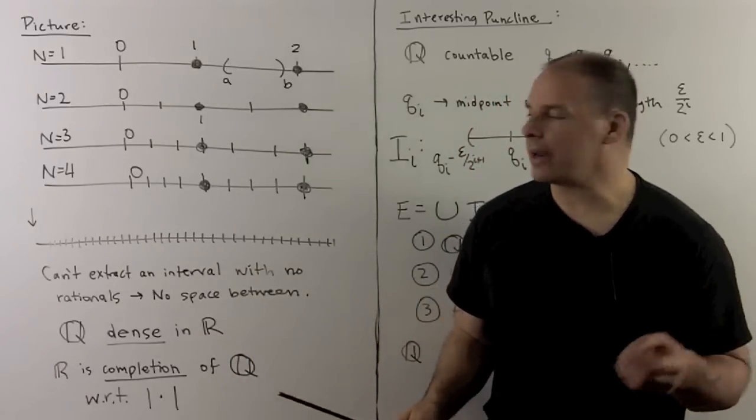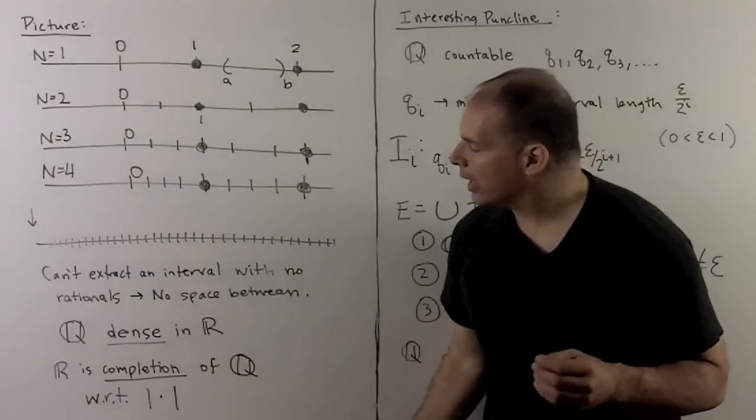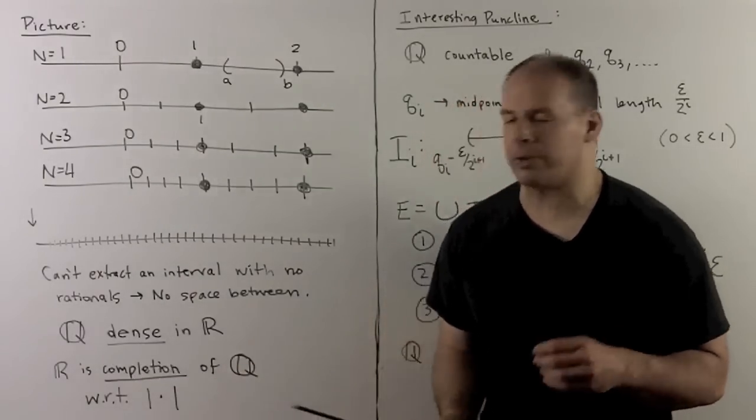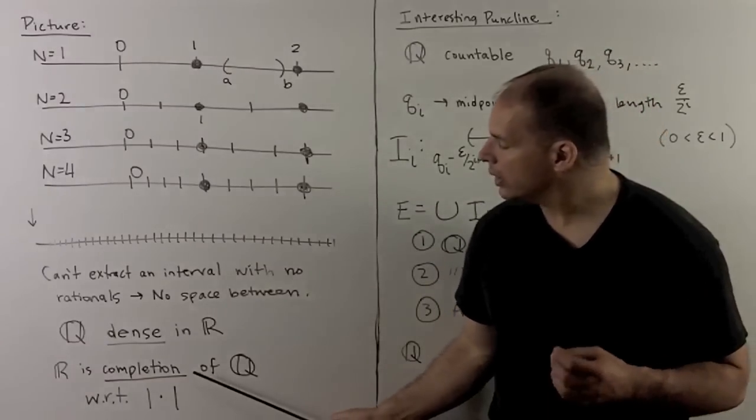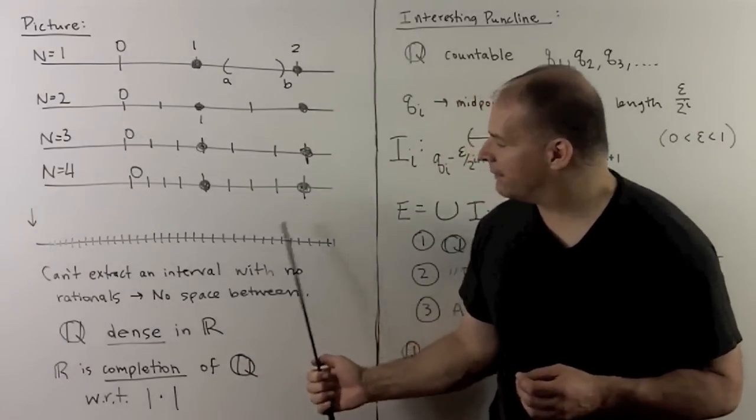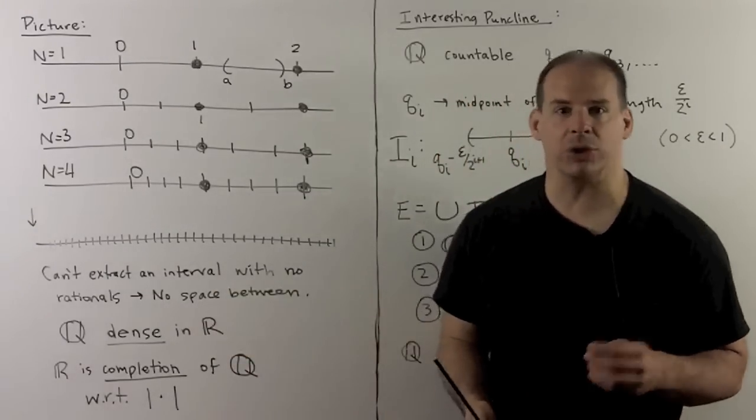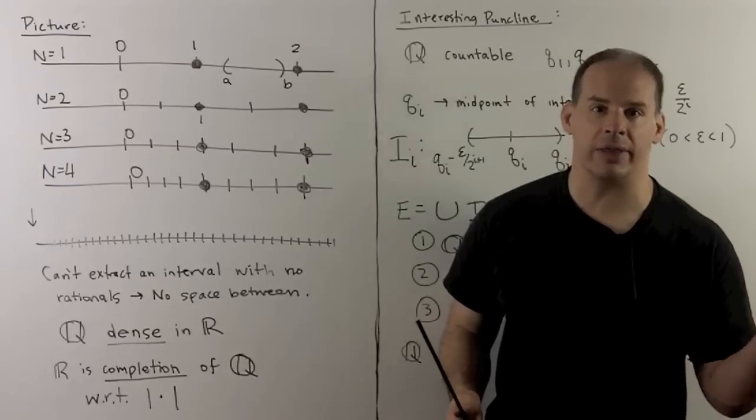Now, a fancy way to say that is that the rationals are dense in the real numbers, and we'll want to show the reals are the completion of the rationals with respect to absolute value. So, completion is just going to be the process that fills in the holes where we have irrational numbers. We need to show that there's nothing else.